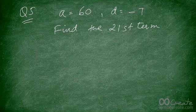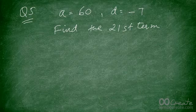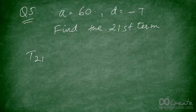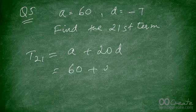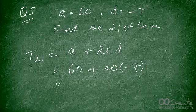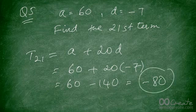Try this: a = 60, d = −7, find the 21st term. The 21st term is a + 20d = 60 + 20 × (−7) = 60 − 140 = −80. That's your answer.